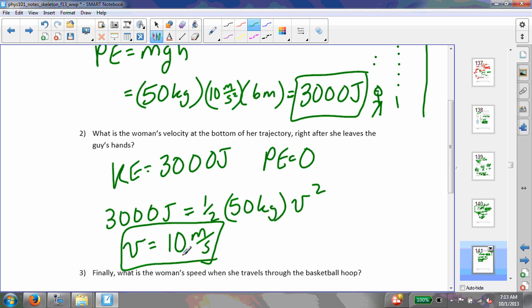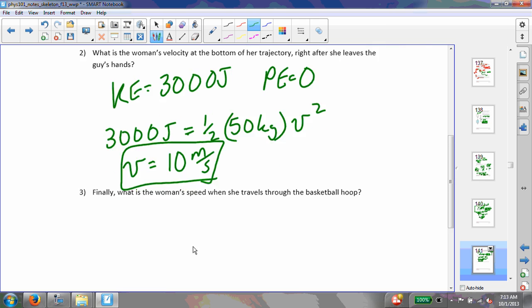Now finally, I want to know what is her speed when she goes through the basketball hoop. Now when she goes through the basketball hoop, I know that her total energy is still 3,000 joules. Alright, but through the hoop, she has both kinetic energy, and I'll call this KEH, plus PEH, where h is the height of the hoop.